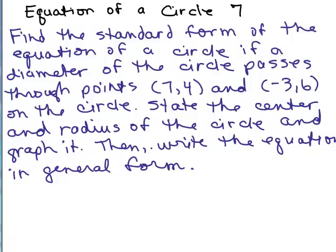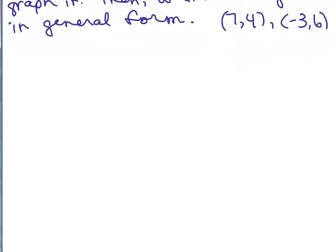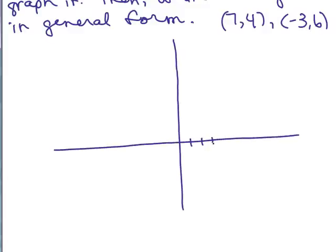So we have a lot to do here. First, let's get a picture of what this looks like. We've got the points (7,4) and (-3,6). So let's do a little graph just to get started. We've got (7,4) right about here and (-3,6).